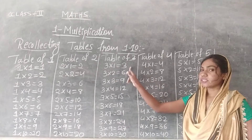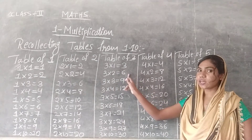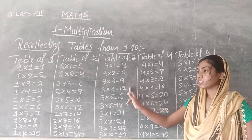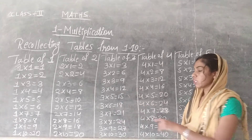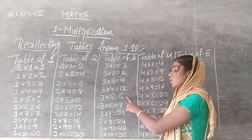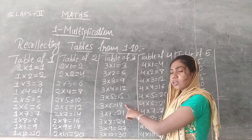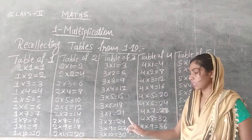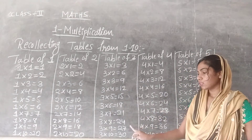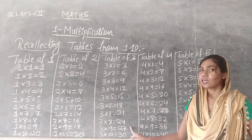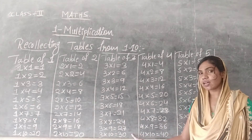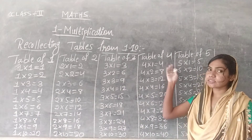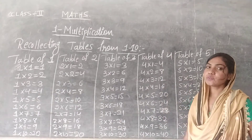3 1s are 3, 3 2s are 6, 3 3s are 9, 3 4s are 12, 3 5s are 15, 3 6s are 18, 3 7s are 25, 3 8s are 24, 3 9s are 27, 3 10s are 30. And the next one is the table of 4.